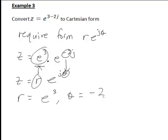So here r is e cubed, θ is negative 2 radians. Now we can proceed as in the other examples by writing z equals r cis θ, which here is going to be e cubed cis negative 2.